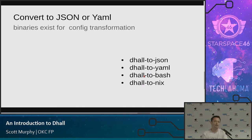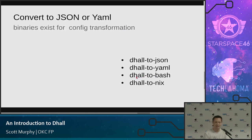There are all kinds of ways to take a Dhall file and convert it to some other config language, because amazingly enough this doesn't have universal adoption yet. You can do Dhall to JSON, Dhall to YAML, Dhall to Bash, Dhall to Nix — that's a fun one we've actually started doing a little bit of. They all work really nicely and I'll show some examples in a minute.